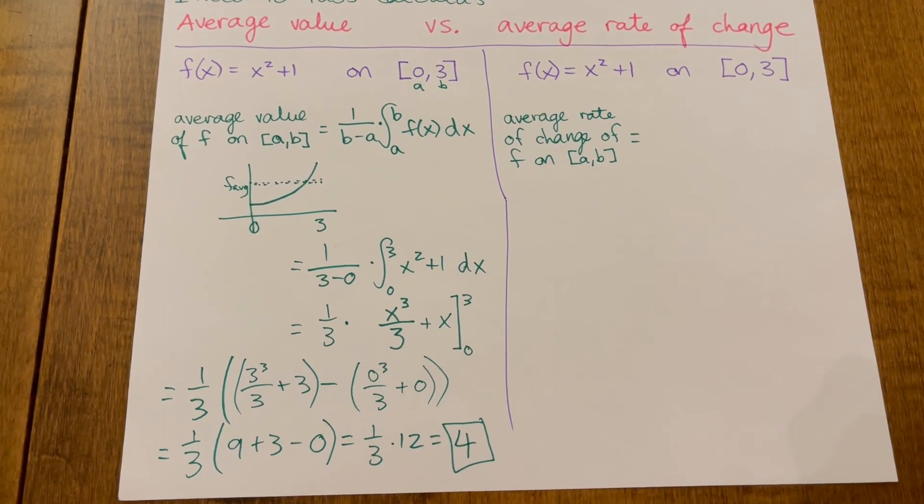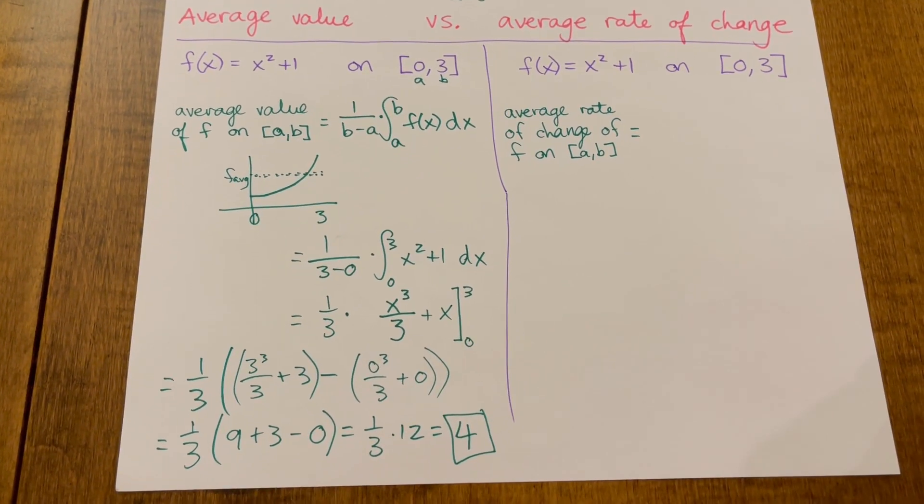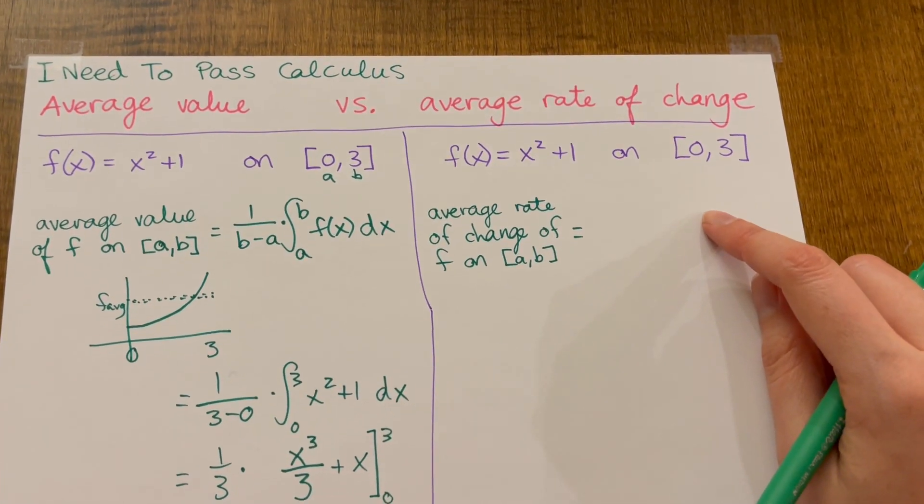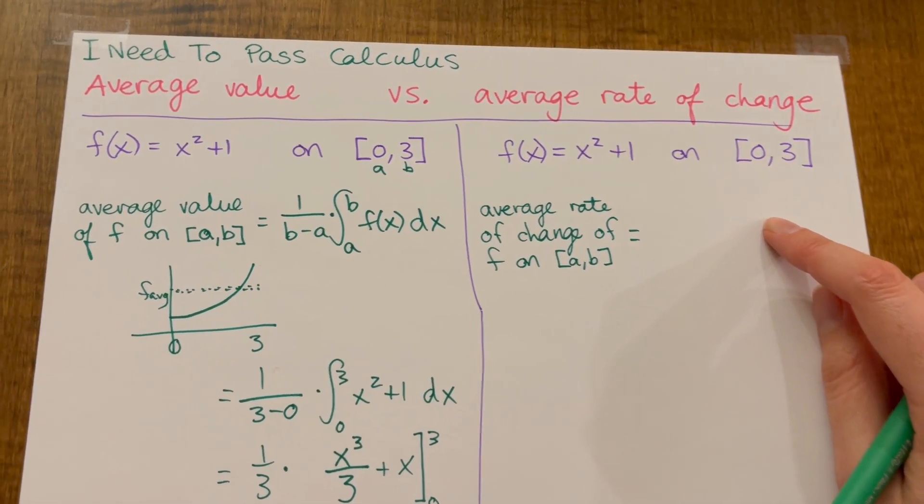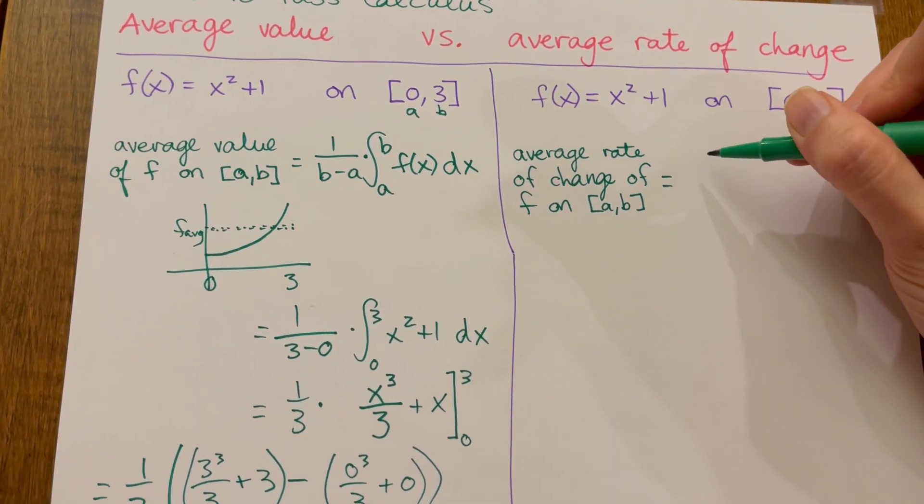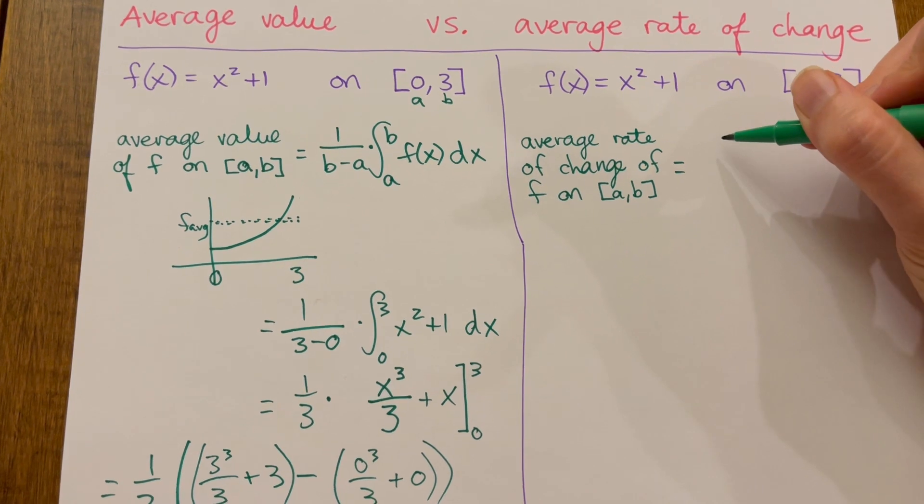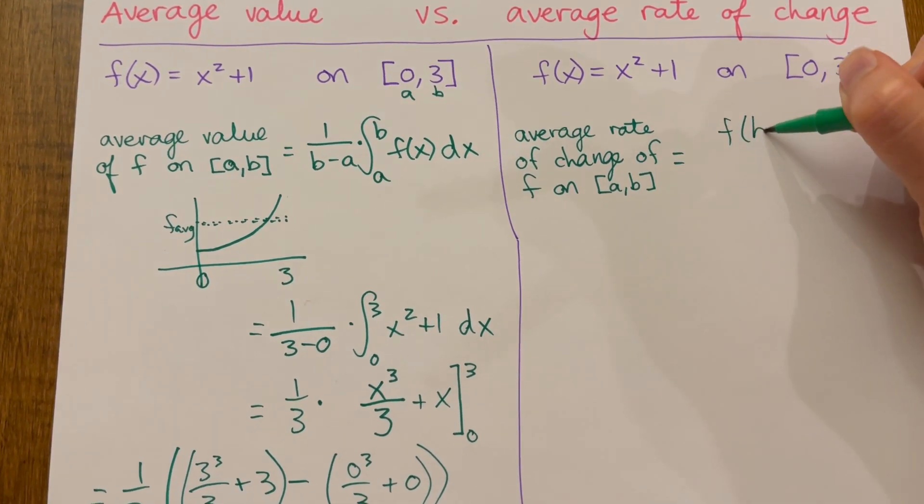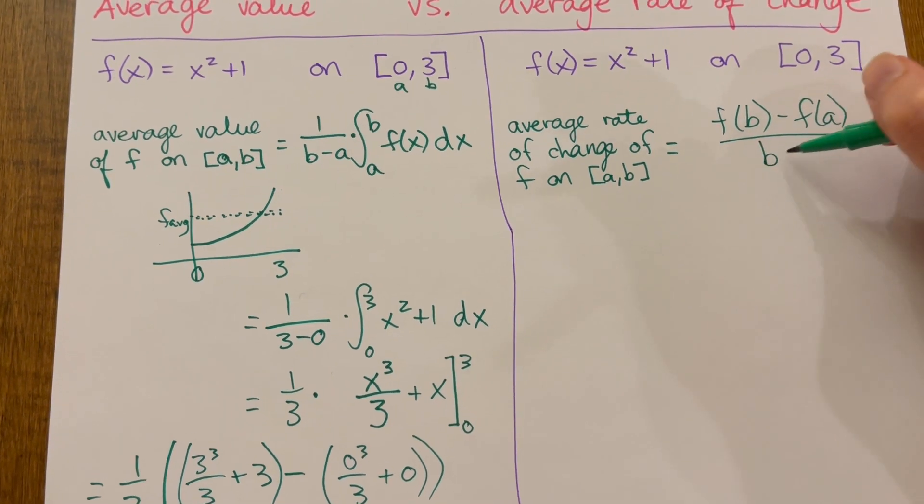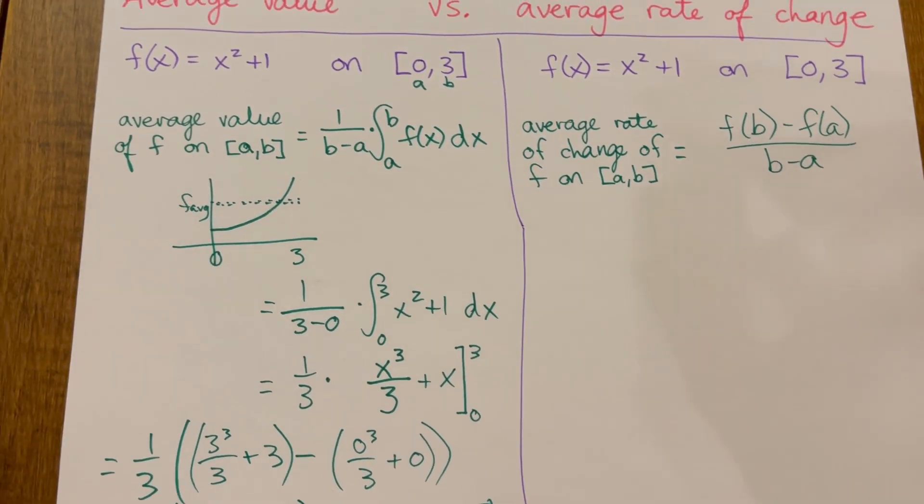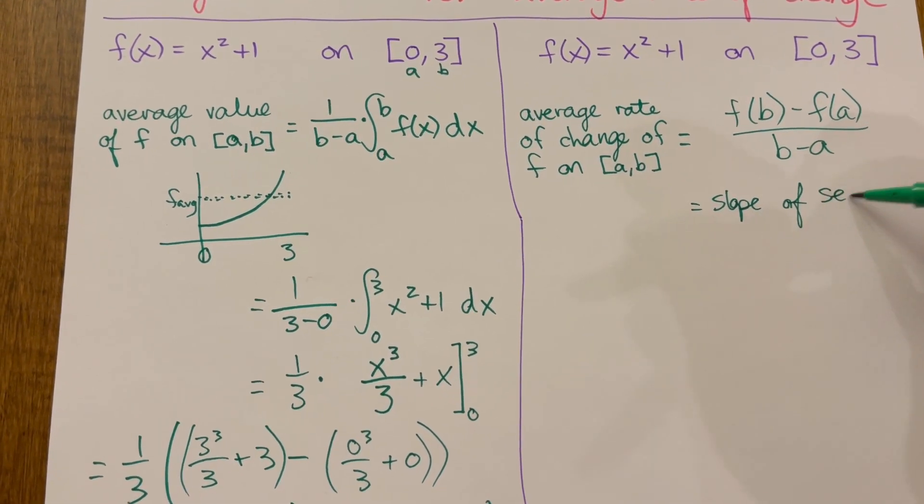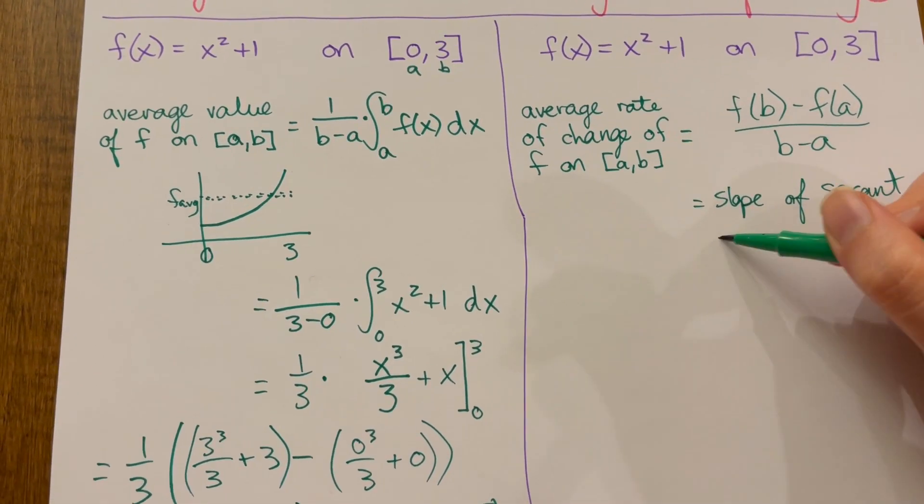Now that's a very different question than asking for average rate of change, which is usually asked about pretty early on in a calculus class. Average rate of change, that's the same as the slope of the secant line. That's going to be your good old-fashioned slope formula: f of b minus f of a over b minus a, which is just your slope of secant line.